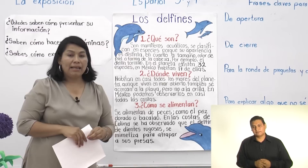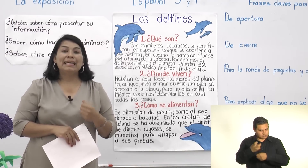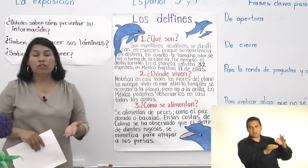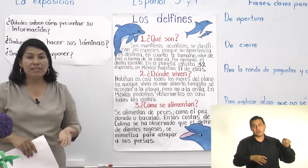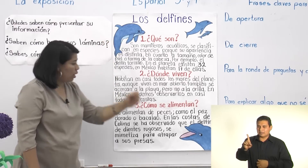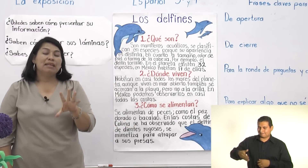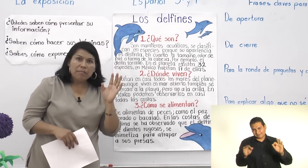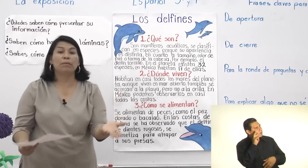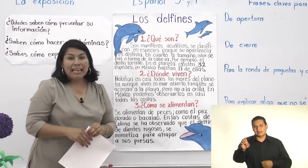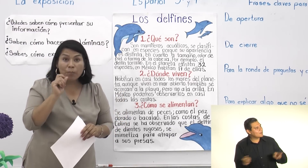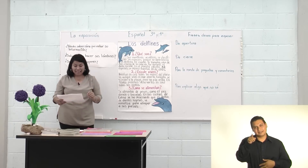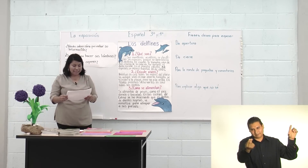Como segunda característica, se recomienda que estas láminas tengan imágenes atractivas. Por ejemplo, en esta ocasión mi lámina es acerca de los delfines, entonces debe tener los delfines dibujados acá con colores atractivos. De esa manera sus compañeros, los que son visuales, pues van a poder darse cuenta inmediatamente que estamos hablando de delfines. Y hay niños que hasta les gusta ver el dibujo e irlo copiando. Estas son las dos características que deben tener todas las láminas.